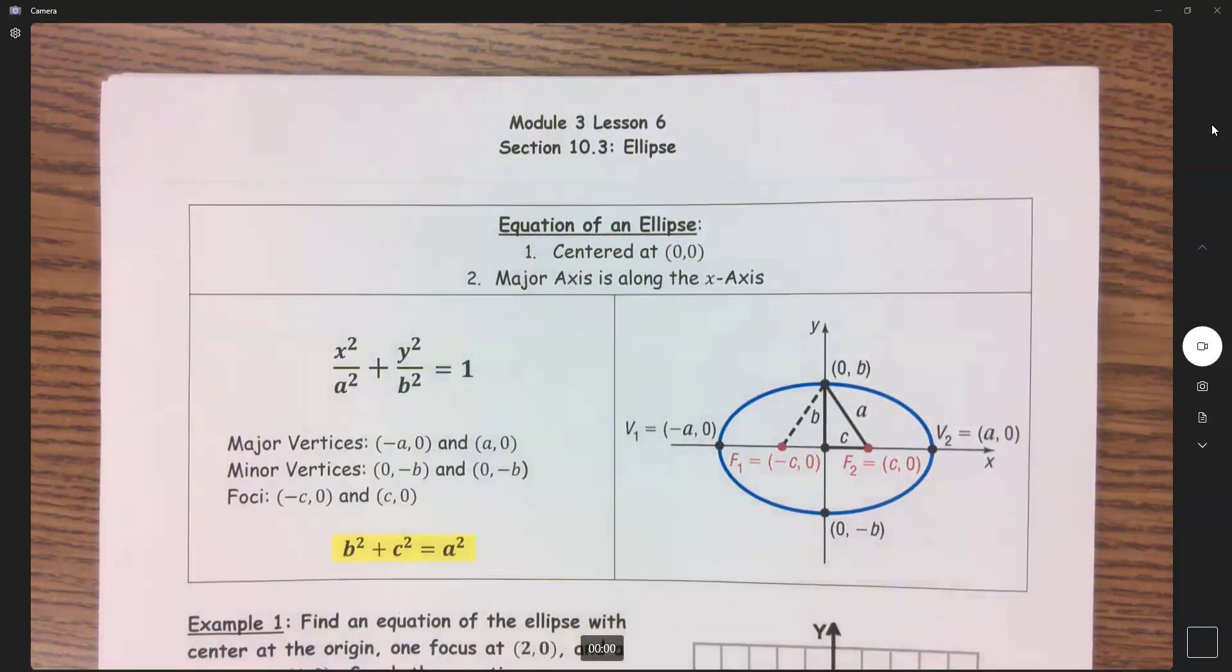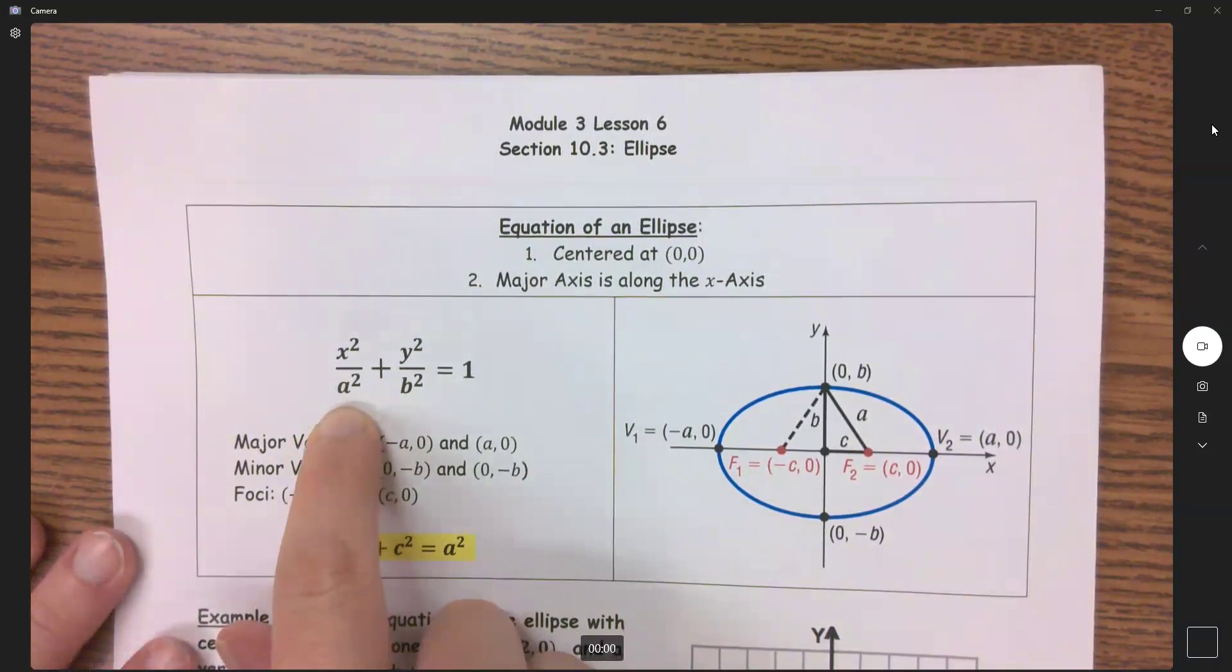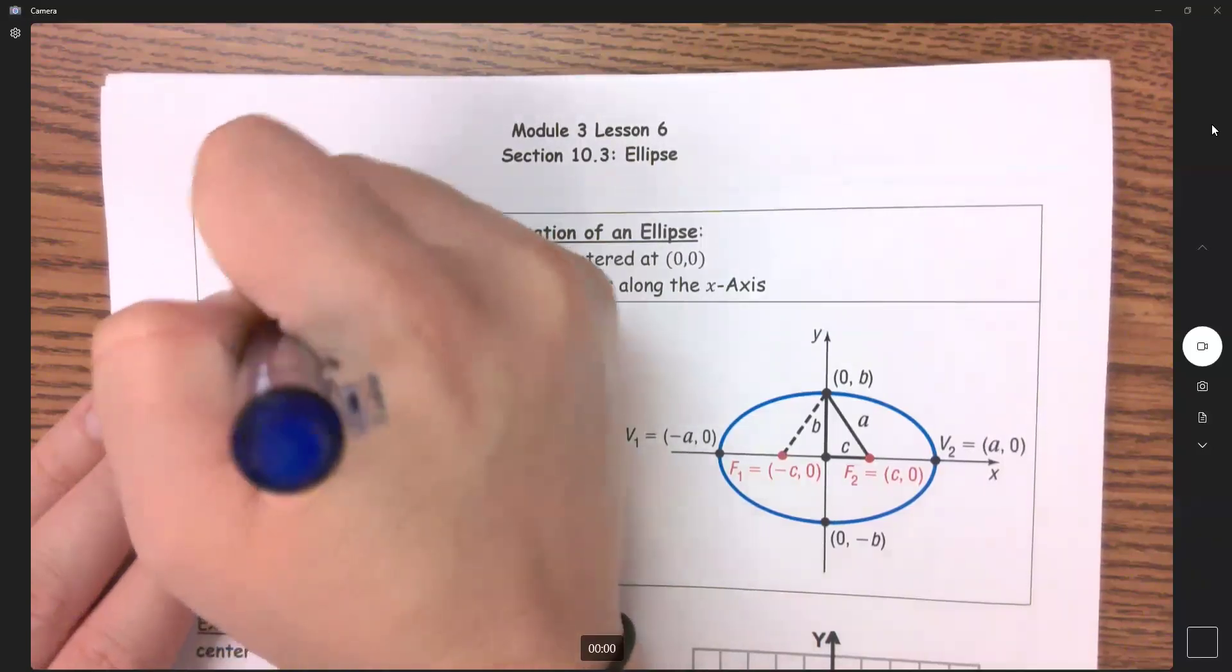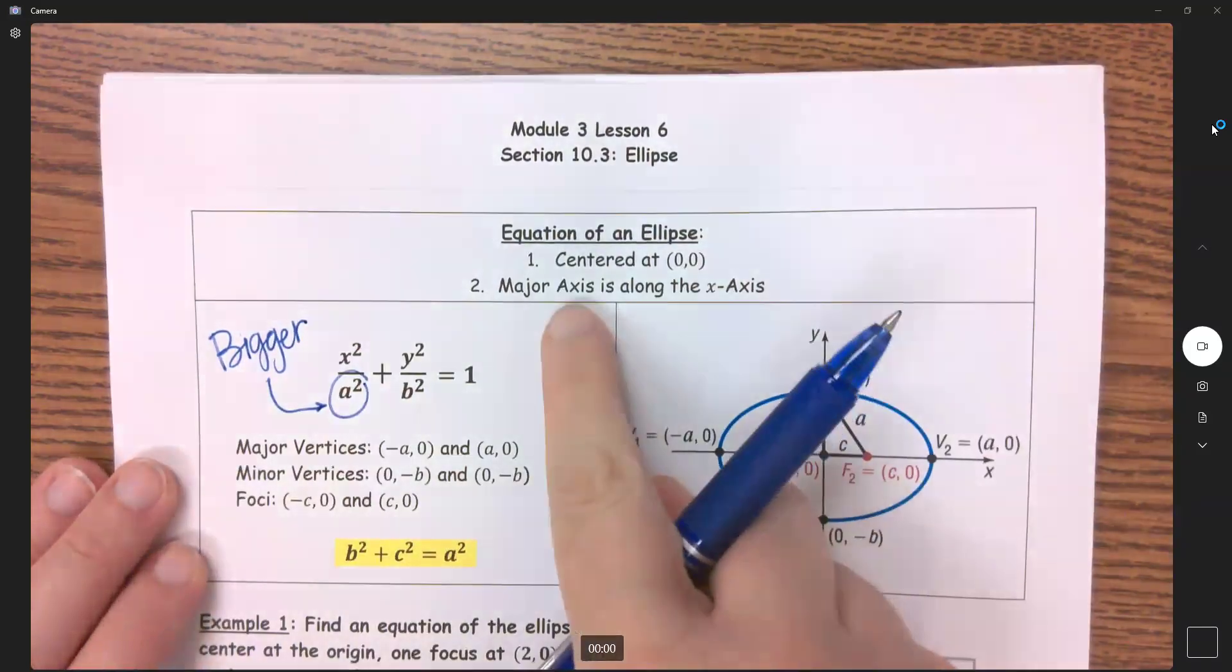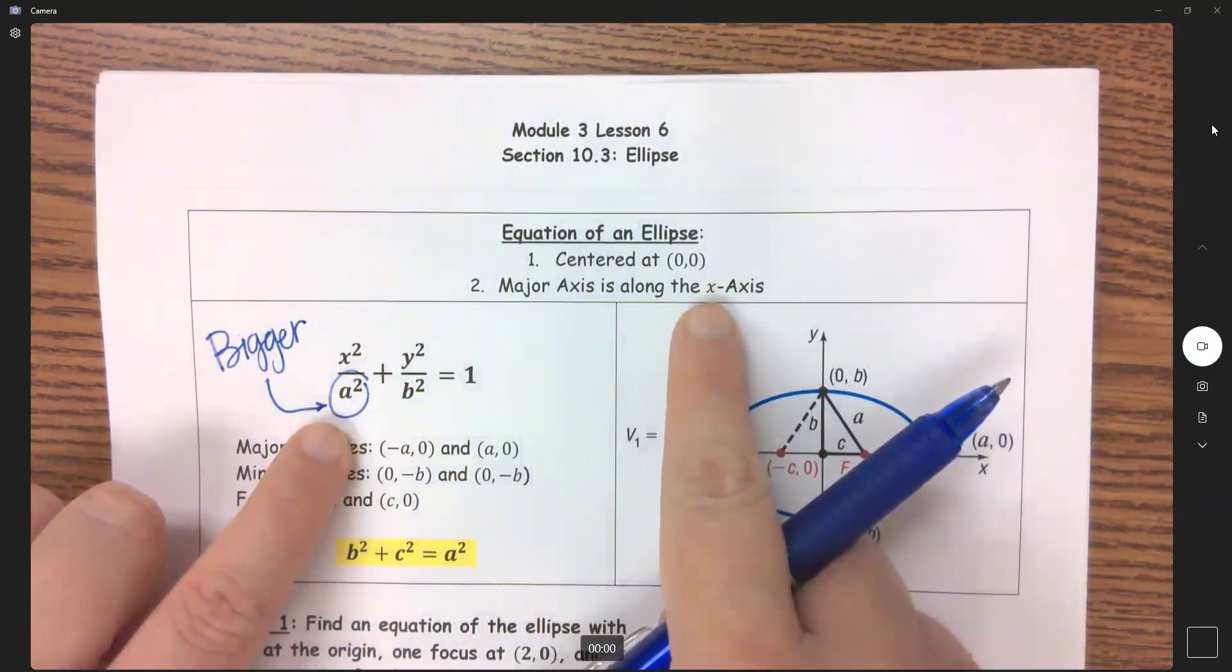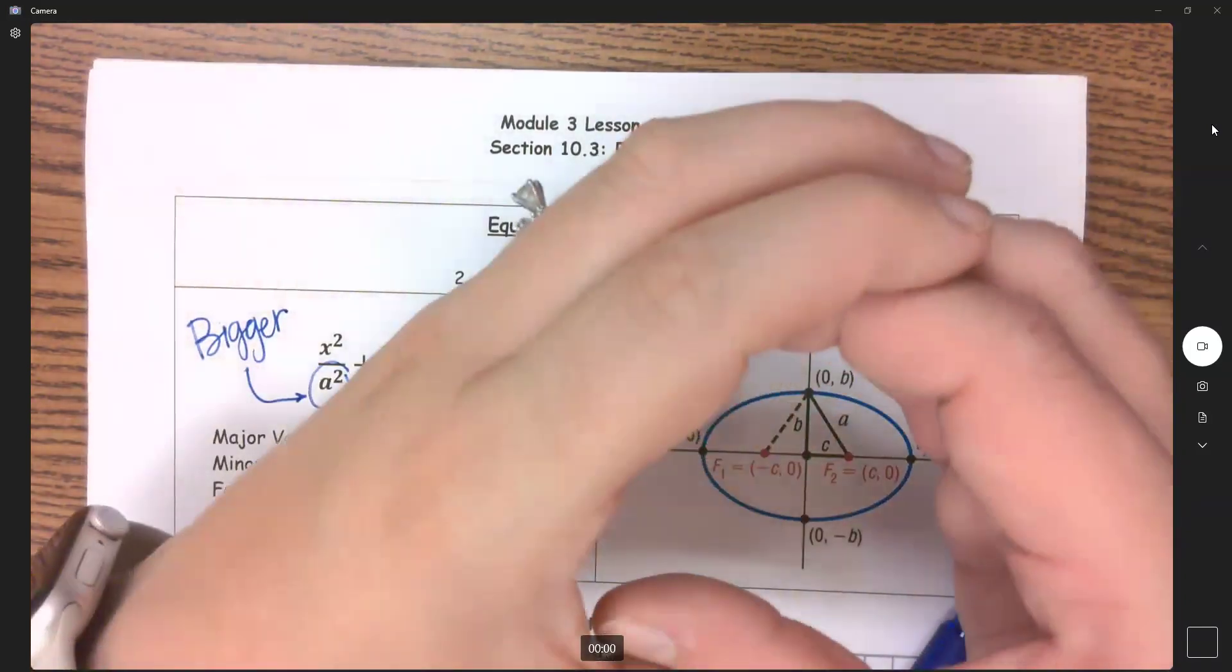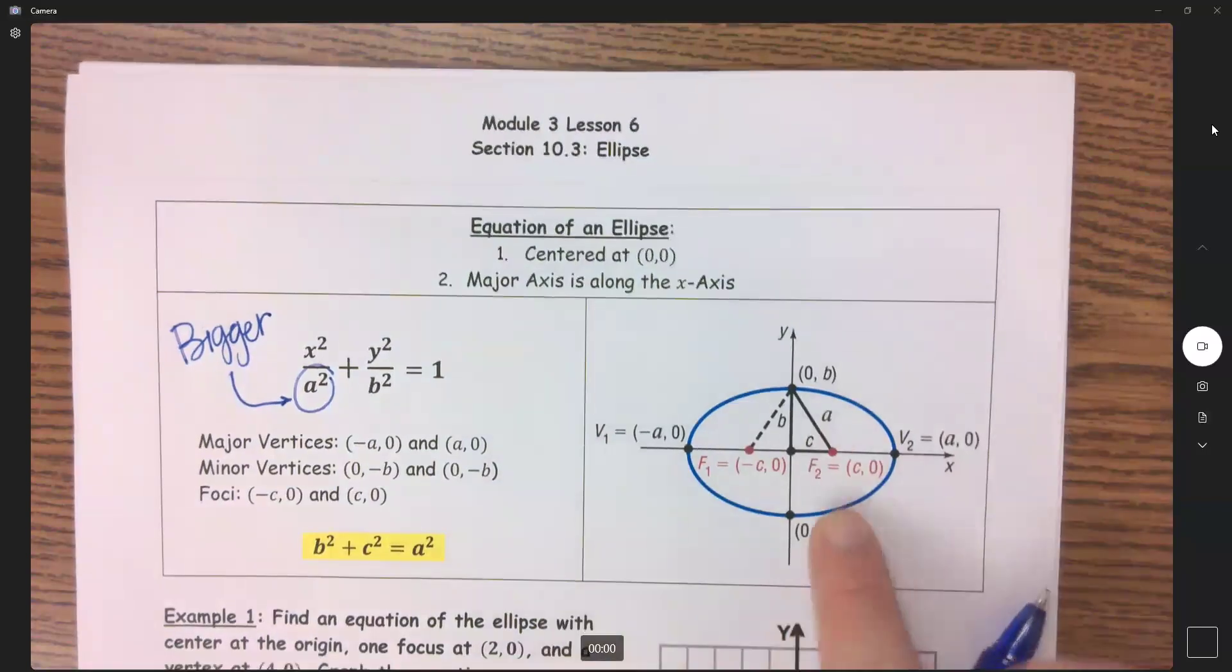The second thing is my major axis is along the x-axis. So how do I know that? I know that because whatever this a squared is, it's going to be the bigger of the two numbers. When my bigger number is under my x variable, that means my major axis is along the x-axis. It's like if you had a circle right here, and then you took it and stretched it along these corners, here's the shape I get.